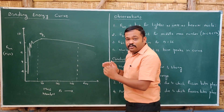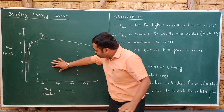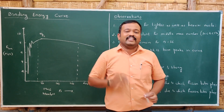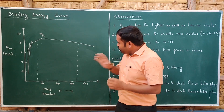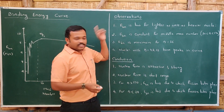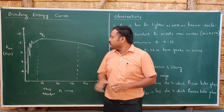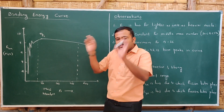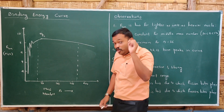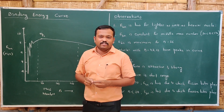Let us analyze this graph. I will characterize nuclei into three categories: lighter nuclei with mass number less than 30, middle nuclei with mass number between 30 and 170, and heavier nuclei with mass number greater than 170. The first observation: binding energy per nucleon is low for lighter as well as heavier nuclei. For middle nuclei, specific binding energy is almost constant. The third observation: iron-56 has the highest specific binding energy of 8.8 MeV.